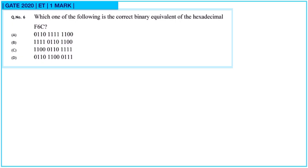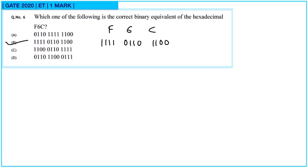Question 6: which one of the following is the correct binary equivalent of hexadecimal F6C? For hexadecimal to binary conversion, we check the binary for each digit. F gives 1111, 6 gives 0110, and C gives 1100. So the correct option is option B.